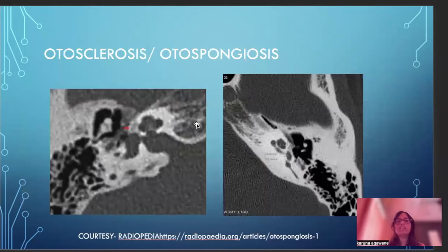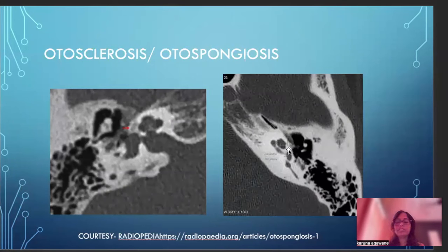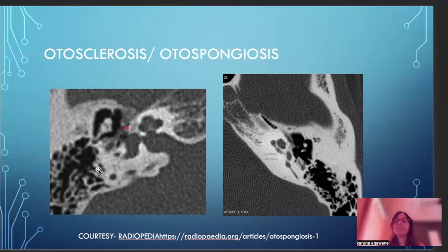Otosclerosis is a sponge-like bony change seen as a lucency, and the most common location is the fissula ante fenestram — between the cochlea and the vestibule, just anterior to the stapes footplate. In these cases we have to look for the thickness of the stapes footplate and the extent of this lucency. The size of the lucency is important — whether it is involving the inner ear structures or not. The patient may present with conductive hearing loss or mixed hearing loss.